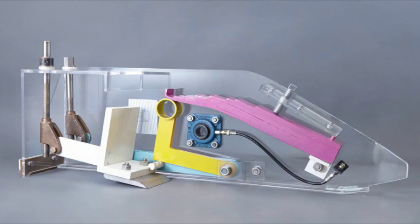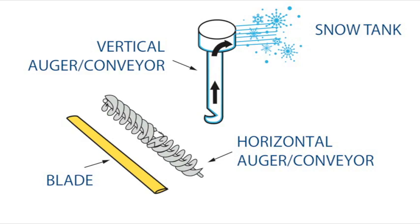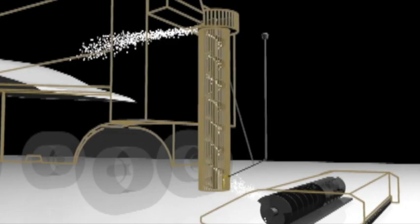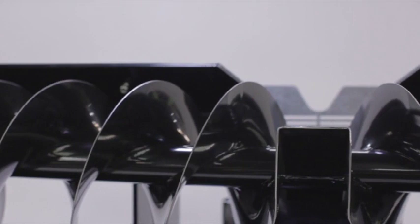This illustration and the animation which follows it shows the function of the augers or conveyors. Please note the transfer from the horizontal auger, to the vertical auger, to the snow tank.